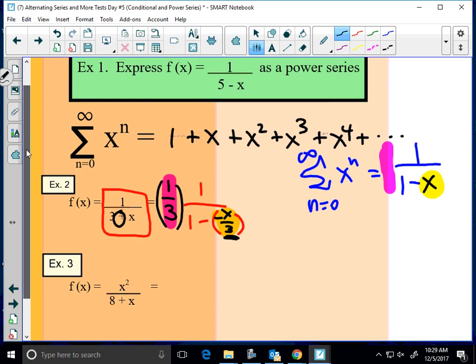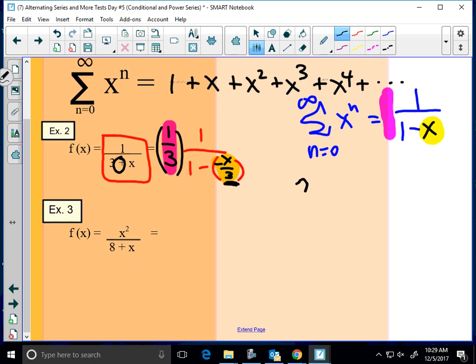Okay, so let's put that into power series form. So I would have the series from n equals zero to infinity. I'm going to keep my constant out in front, one third for a moment.